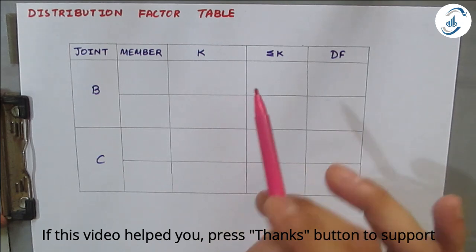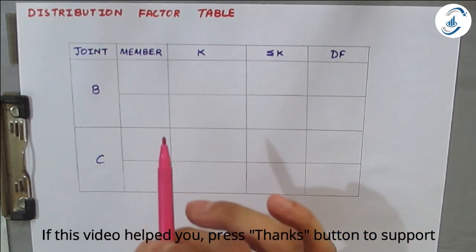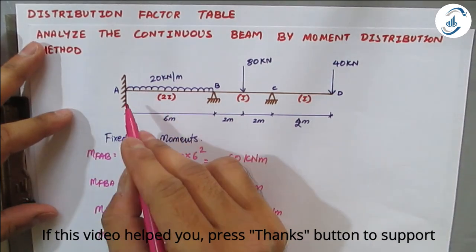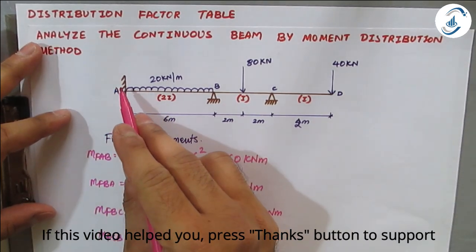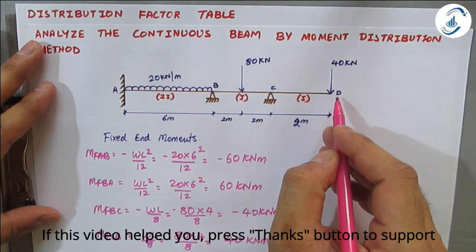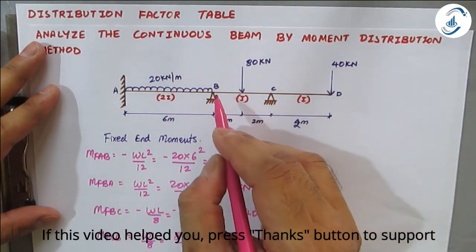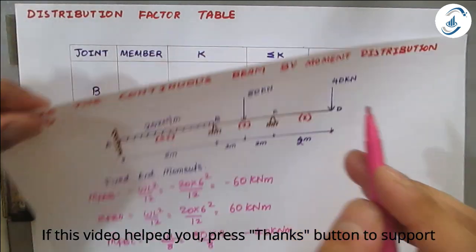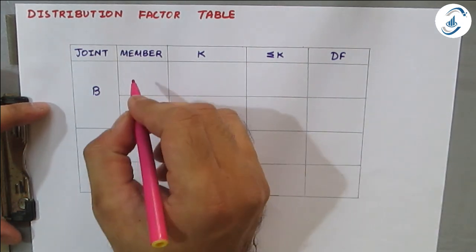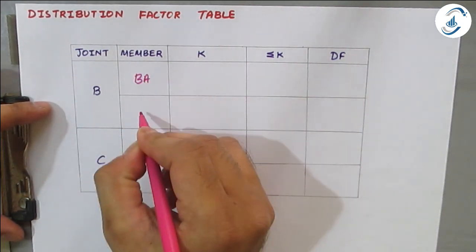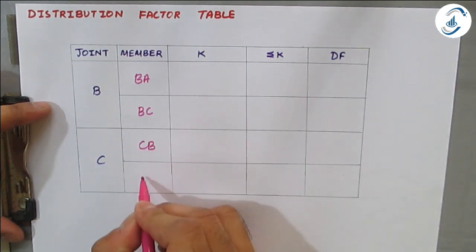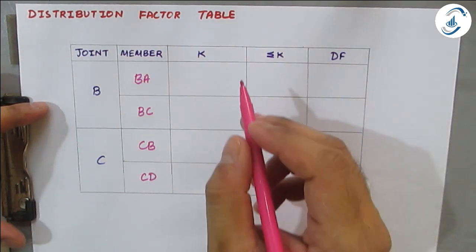There are two joints B and C. Joint A is fixed so no distribution factor is needed there. For the overhang, D is not treated as a joint either. From joint B there are two members: BA and BC. From joint C there are two members: CB and CD.